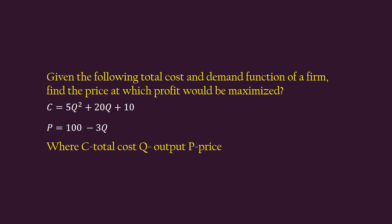C equal to 5Q squared plus 20Q plus 10. P equal to 100 minus 3Q. Where C equal to total cost, Q equal to output, P equal to price. The answer.